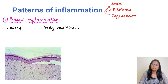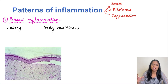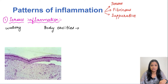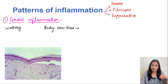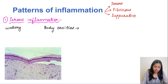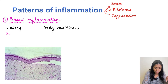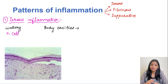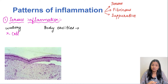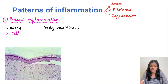Starting with the first pattern, which is serous inflammation. The hallmark of acute inflammation is increased vascular permeability. When there is increased vascular permeability, the fluid present inside the vascular lumen leaks out into the extracellular space. This fluid is called edema fluid, and in serous inflammation this edema fluid is characteristically thin and watery.